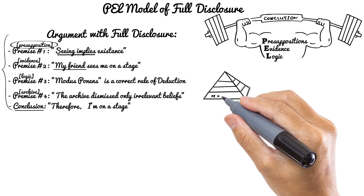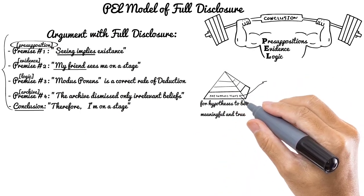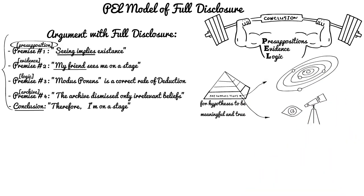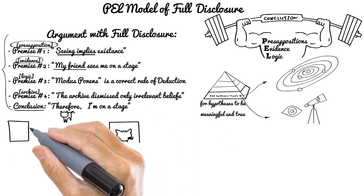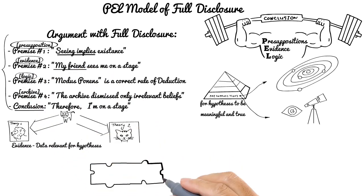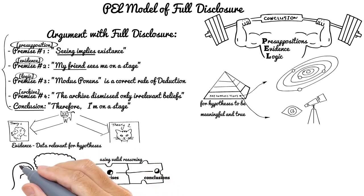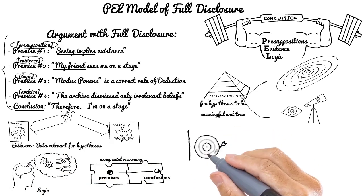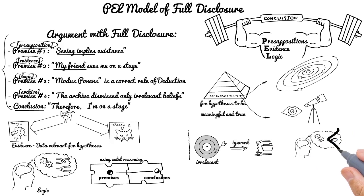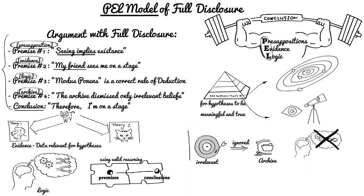Remember, presuppositions are beliefs that are necessary for the considered hypothesis to be meaningful and true. Evidence is data which must be meaningful in view of available presuppositions and relevant to the hypothesis. Logic combines the presupposition and evidence using valid reasoning to reach a conclusion. Archive has no active role and hence it's not indicated in the acronym for the PEL model. That's it for the PEL model of full disclosure as an important model for building good logical reasoning in science.